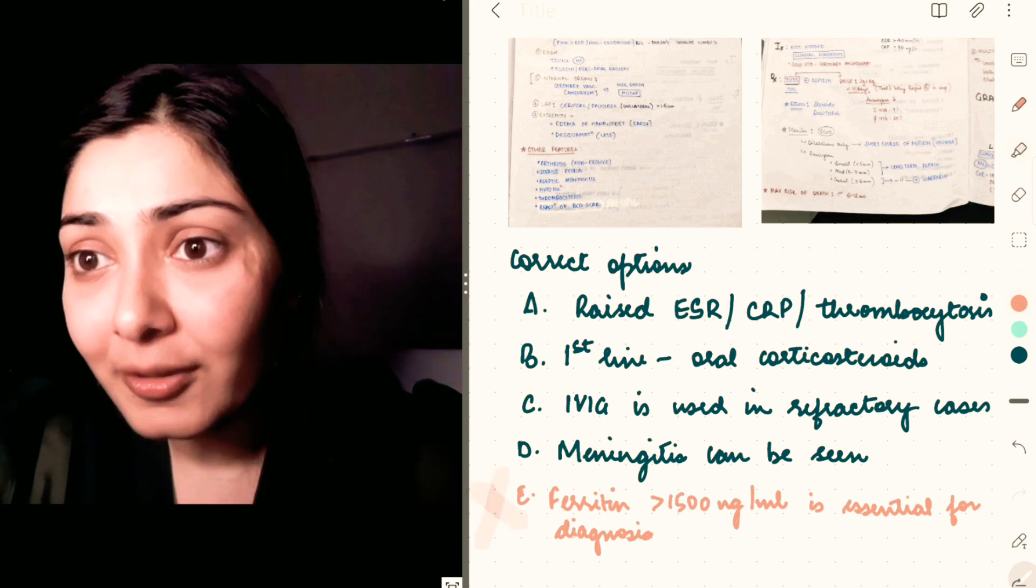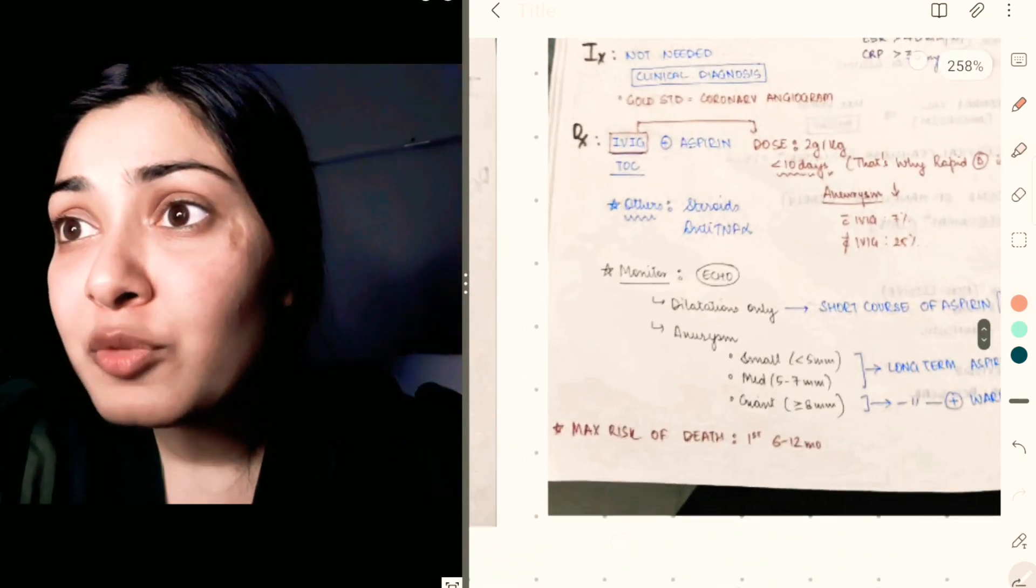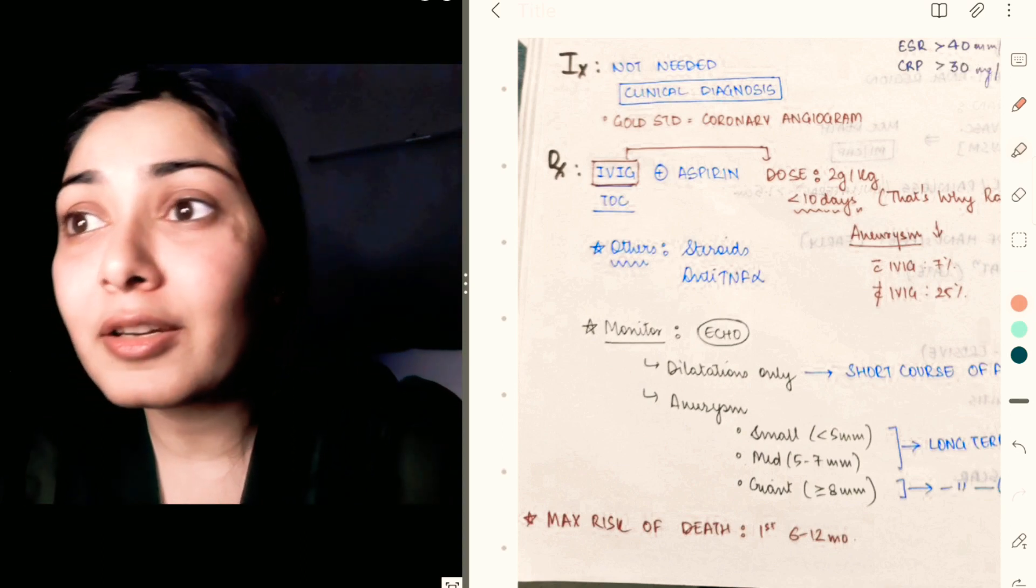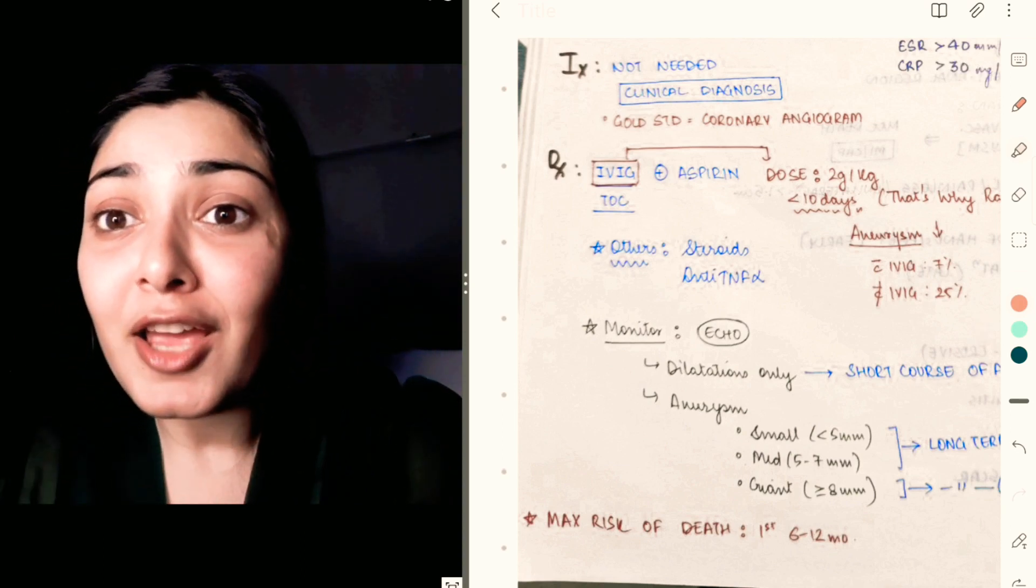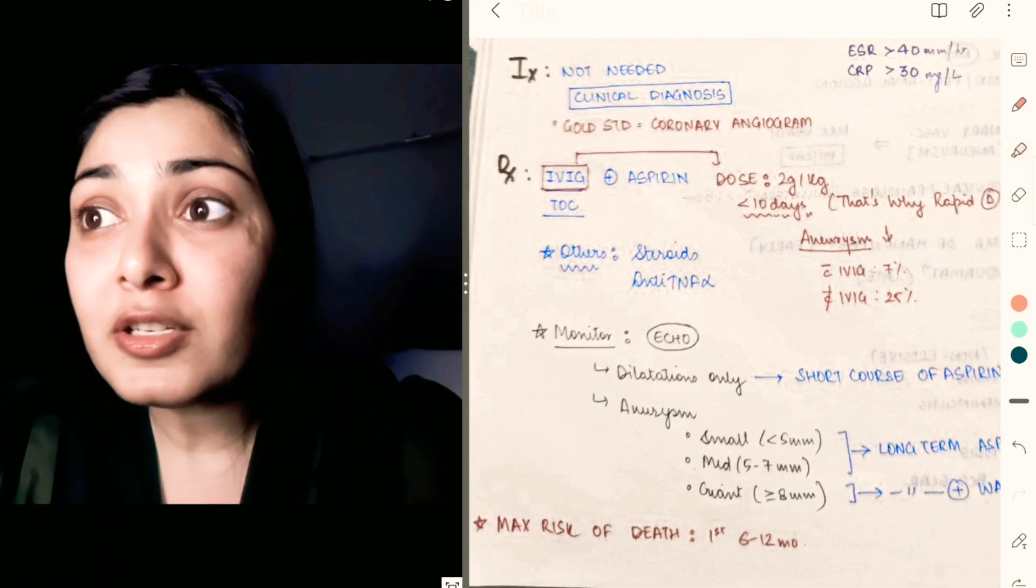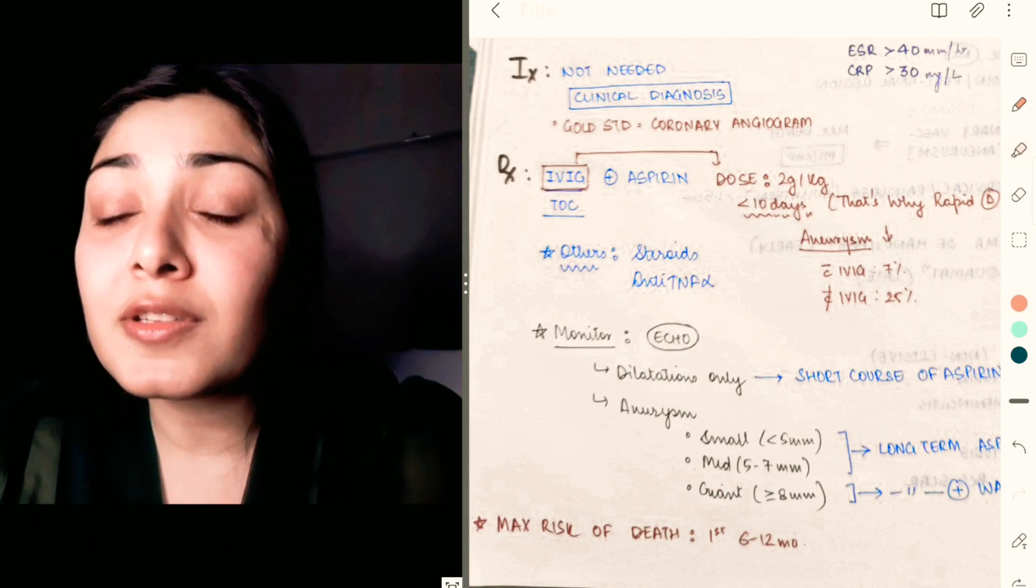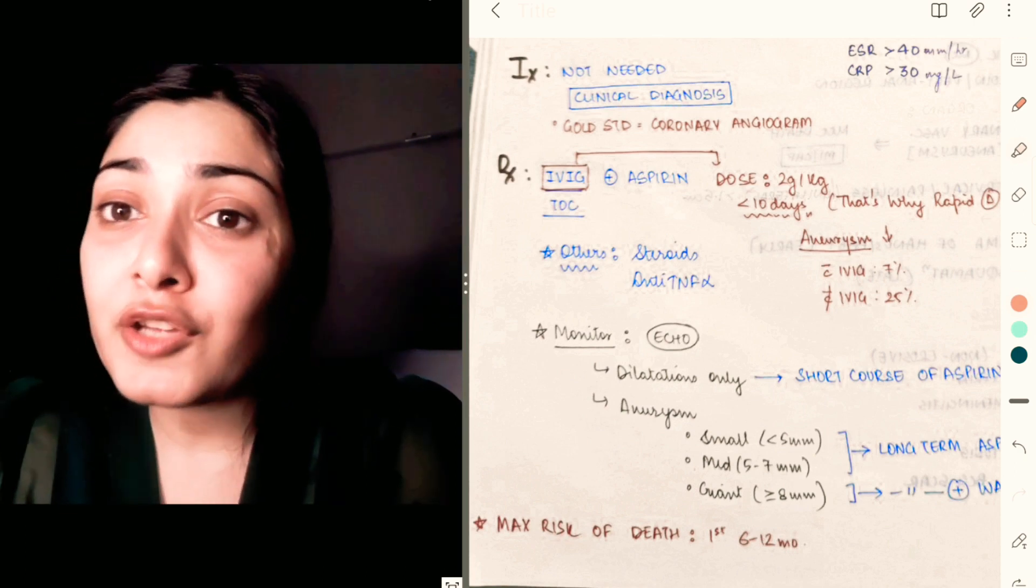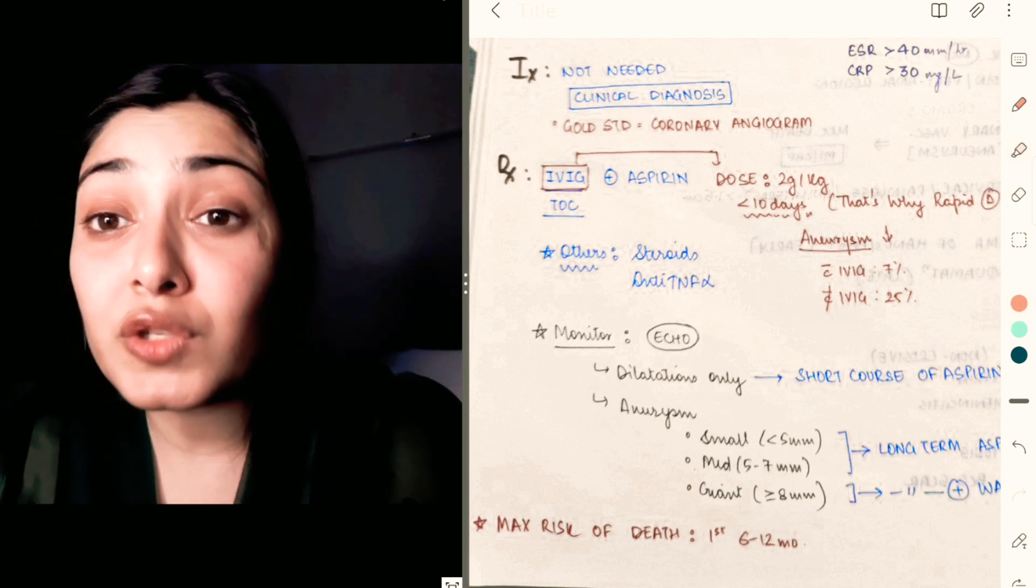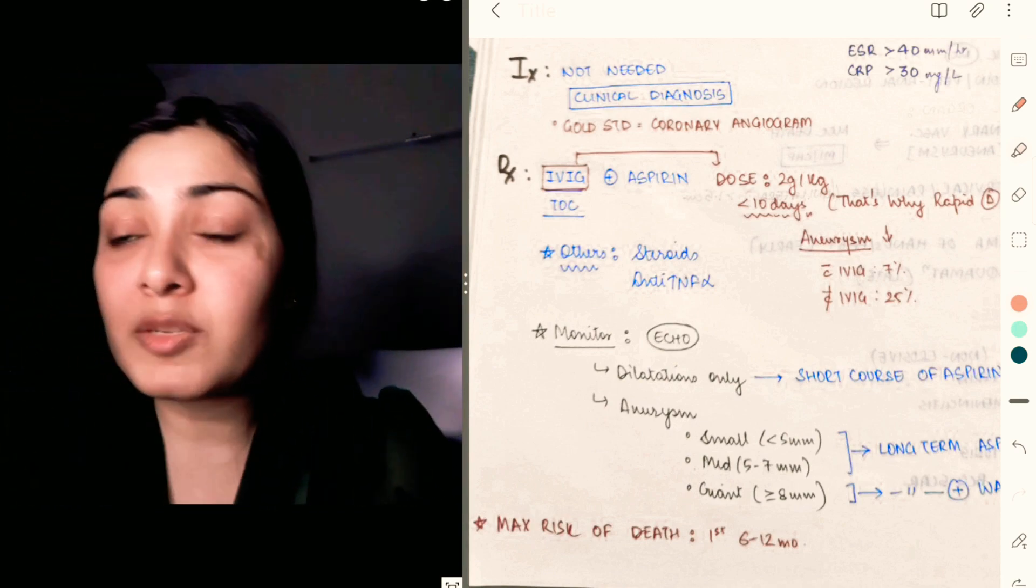Now coming to the management, we all know that IV IG is the gold standard here—IV IG is the treatment of choice. This IV IG should be given within 10 days of the onset of disease because it significantly decreases the risk of aneurysm. If you have given IV IG in the treatment, then the risk of aneurysm is just 1%, whereas without IV IG it's 25%. You can see what a huge difference it's making.